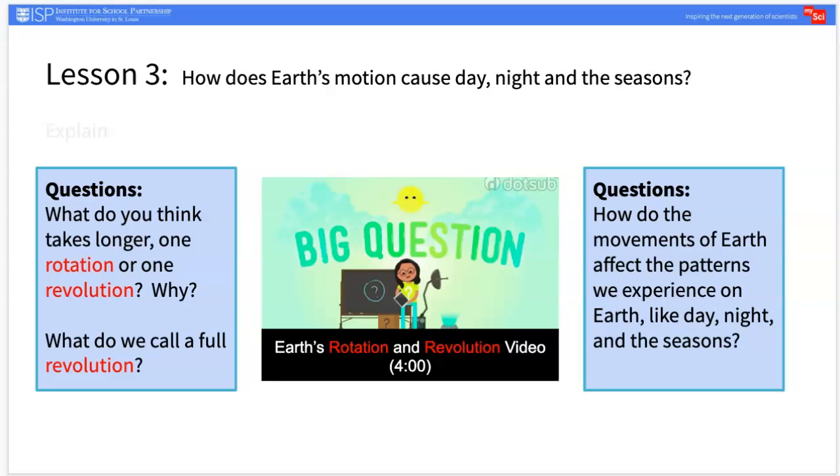Have students move in a counterclockwise fashion around the Sun and consider if the rotation of Earth on its axis takes more or less time than the revolution of Earth around the Sun. Next, students will obtain information about Earth's rotation and revolution from a video.